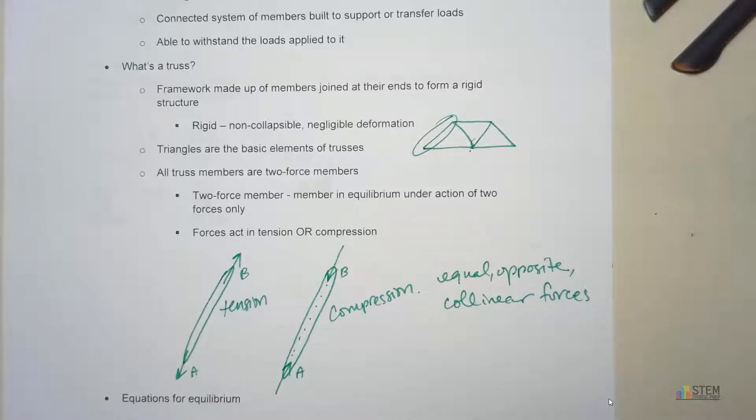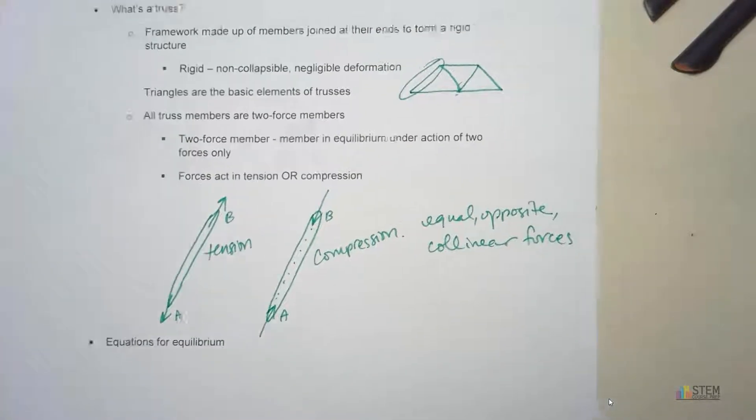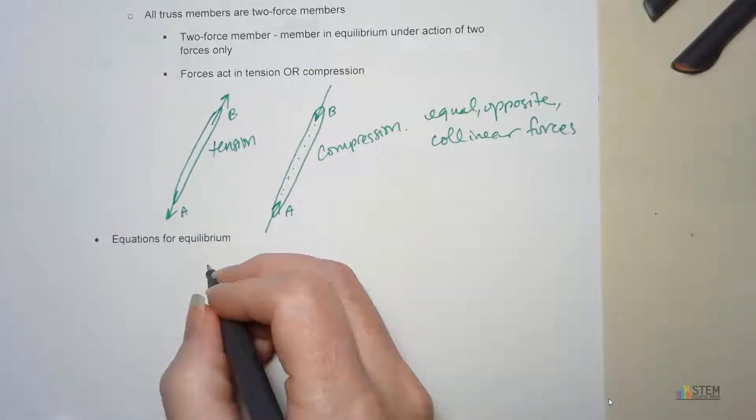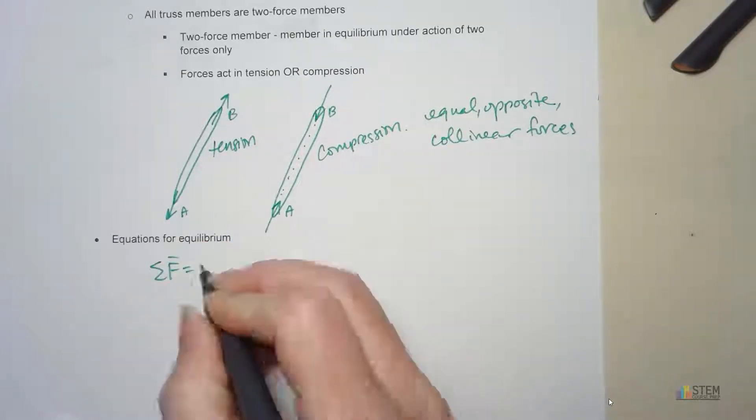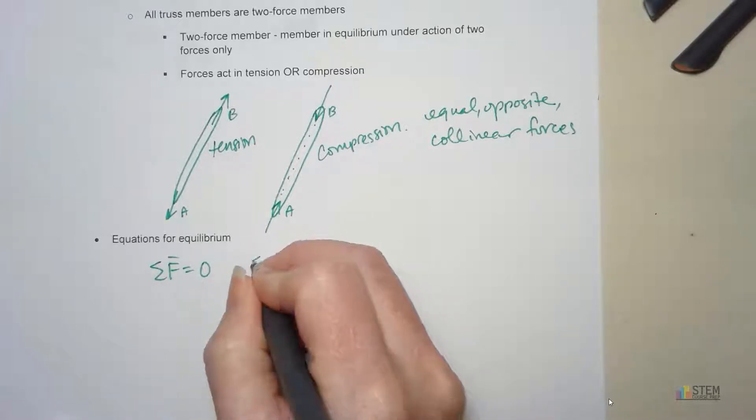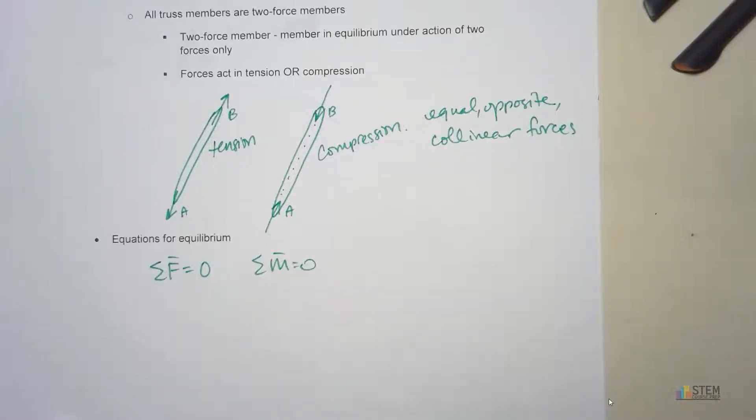Now our equations. Our equations we're going to use here are pretty simple. For equilibrium, you guys can probably guess. We're going to have the sum of the forces equal zero, and sum of the moments will be zero.